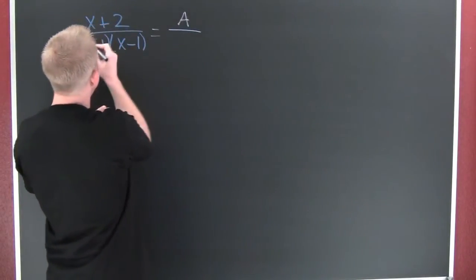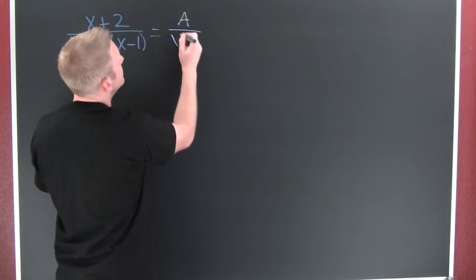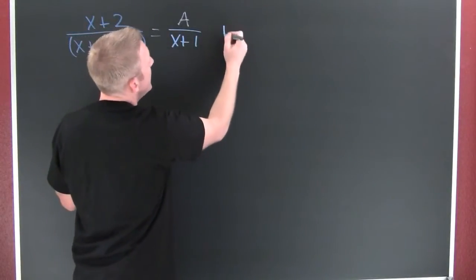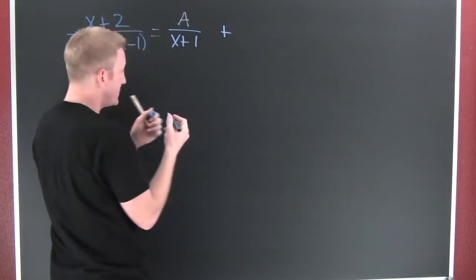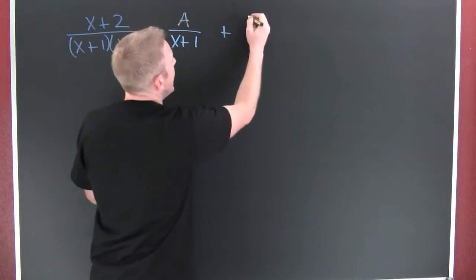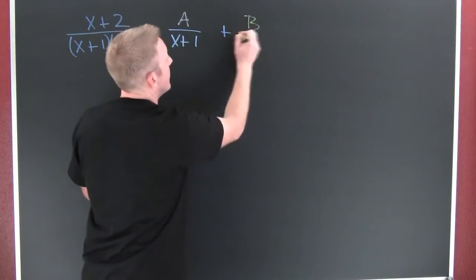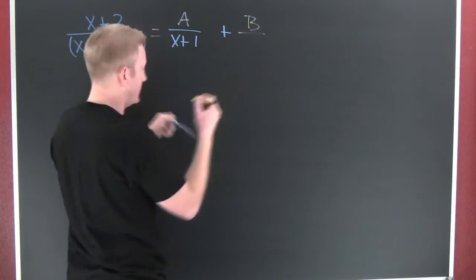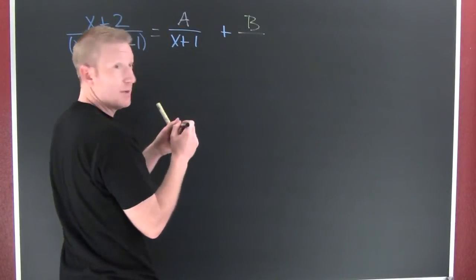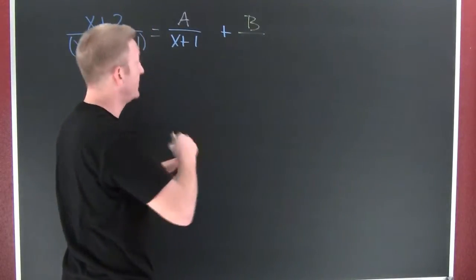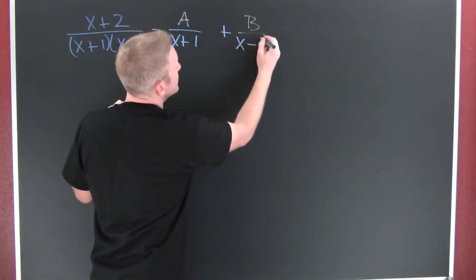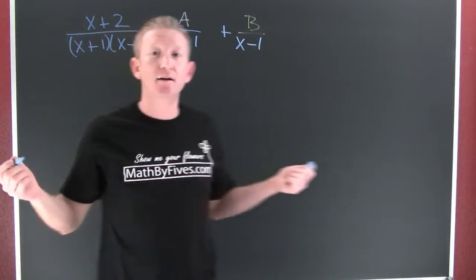I want this over my first factor in my denominator. And then I want to see what fraction I need to add to that fraction. X minus one — just like that.